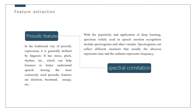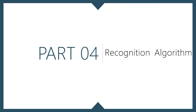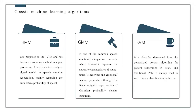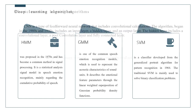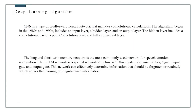Now we come to the last part: recognition algorithms. The Hidden Markov Model, Gaussian Mixture Model, and Support Vector Machine are classical approaches. The attention mechanism is inspired by human cognition — when processing information, humans focus on a part of all information while ignoring less important parts. It was originally used for machine translation and has become an important concept in neural networks.